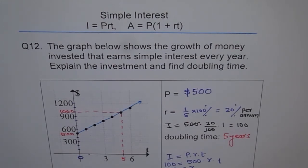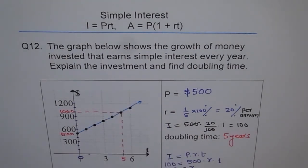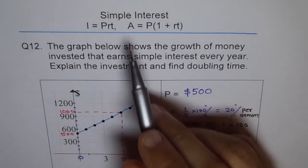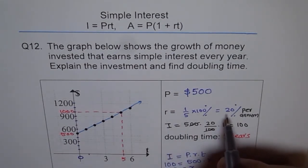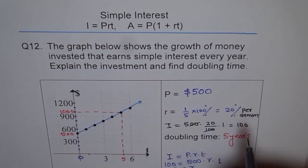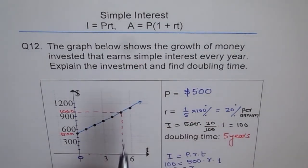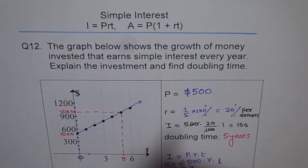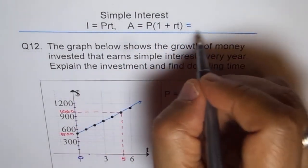The amount increases linearly when you invest in simple interest, and the rate at which it increases is P × R × T — that is essentially the slope. The rate of interest is 20 percent.